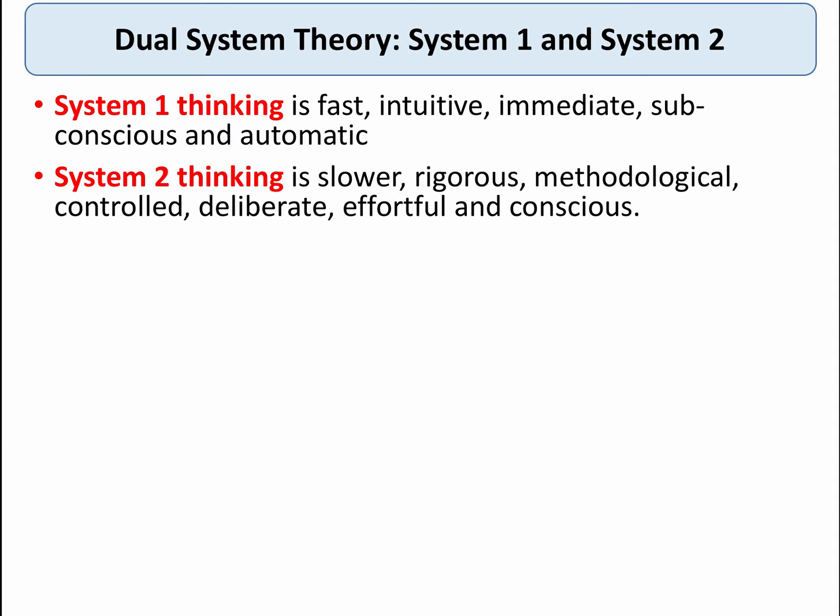In contrast, system two thinking is much slower, rigorous, often methodological and controlled — it requires effort and is conscious. So if I was to ask you what is 48 times 159, not many people will find an immediate answer. We have to use quite a bit of brain energy and battery life to find the answer.